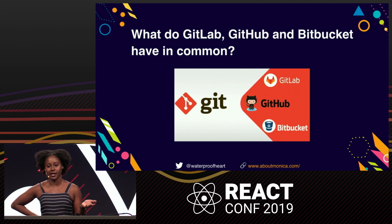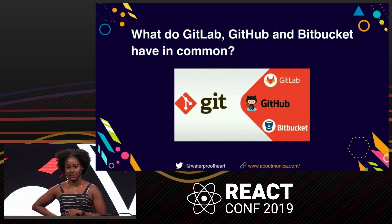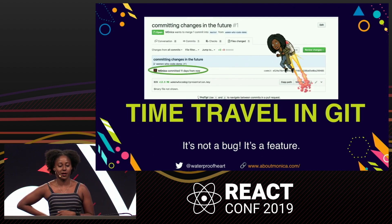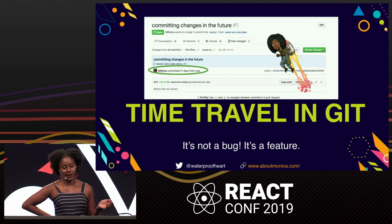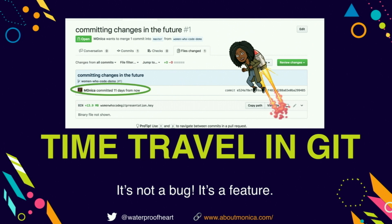A lot of my examples use GitHub because that's the service I use. So first I'm going to talk about the title of the talk: time traveling in Git. There was a time when I accidentally discovered that you can commit code into the future on GitHub, and this is a feature, not a bug.